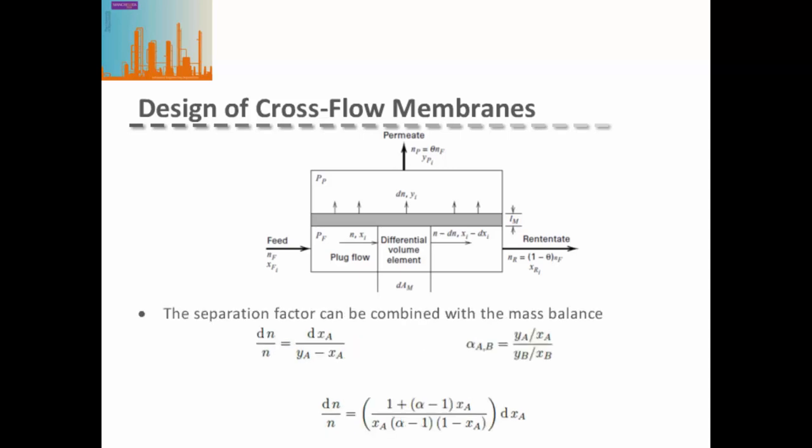We can then combine our definition of the separation factor with our differential mass balance to generate an expression for the change in flow rate at a given flow rate at a particular point in the membrane, in terms of the change in feed retentate composition of component A and the separation factor.